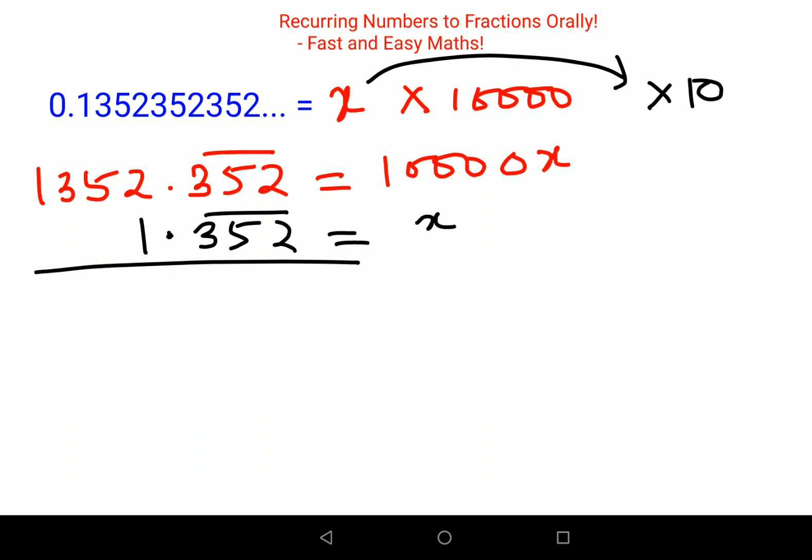Your answer now changes to 1351 equals, now this is 10,000x minus 10x, so that will get you 9,990x.